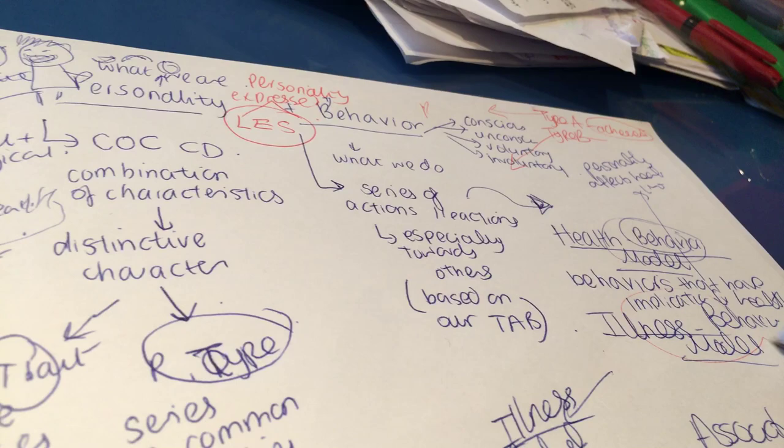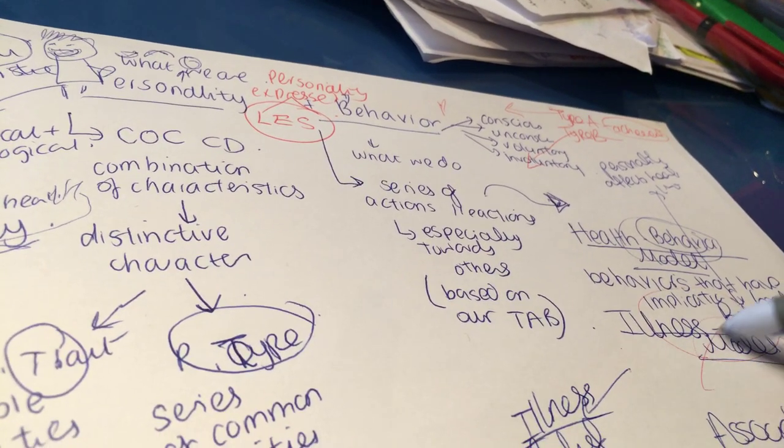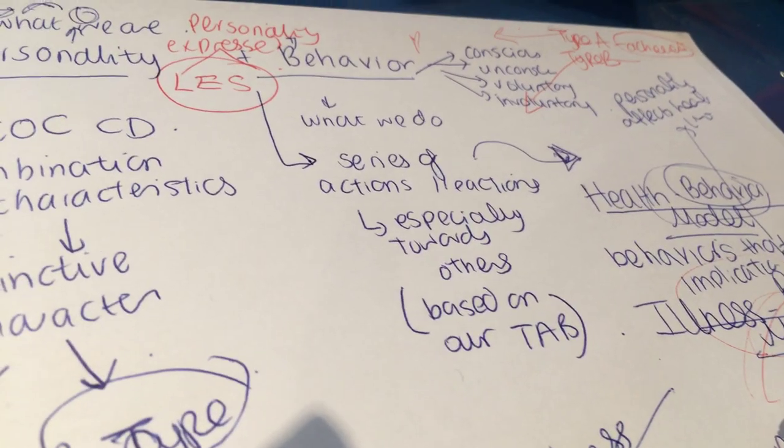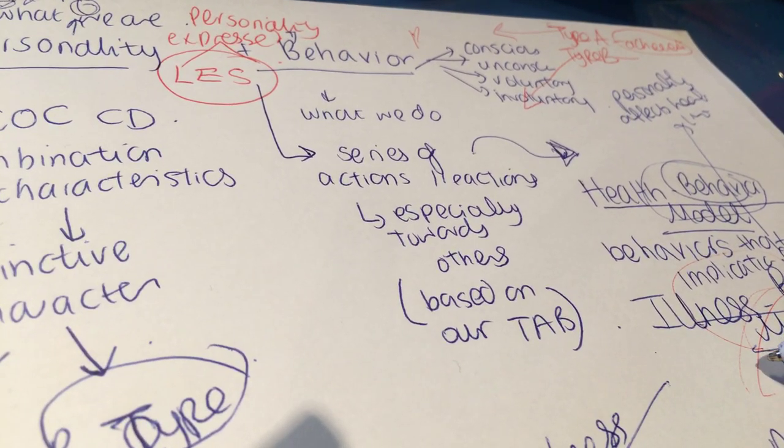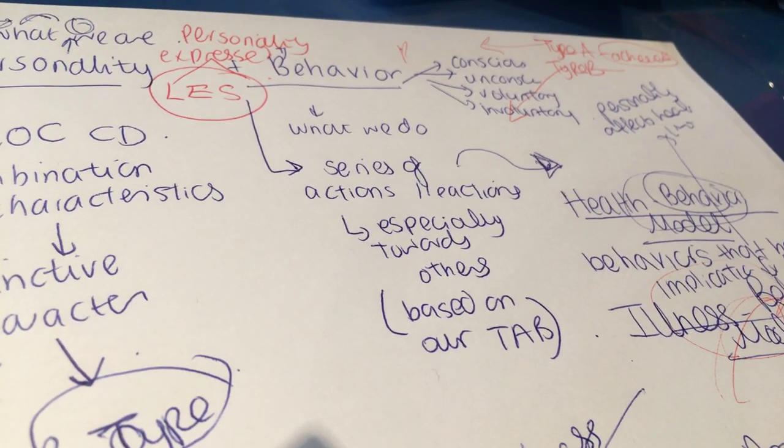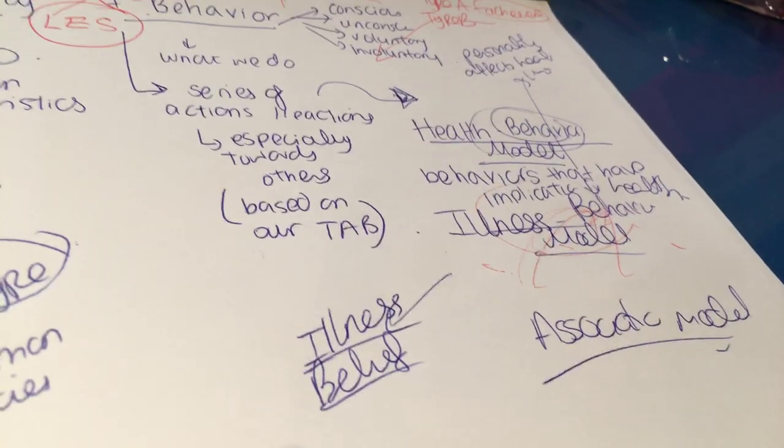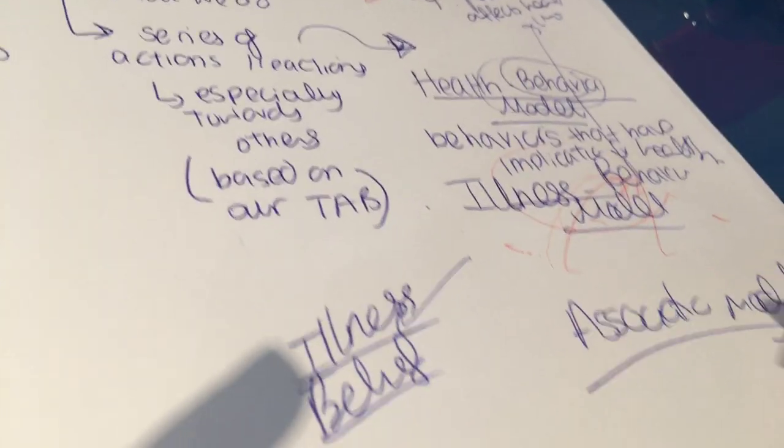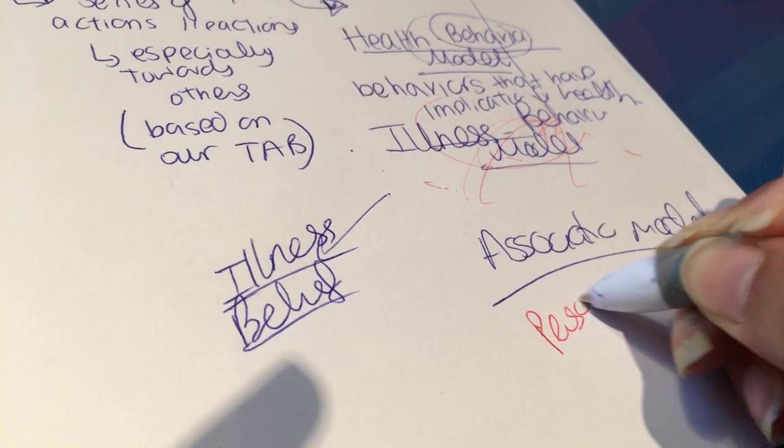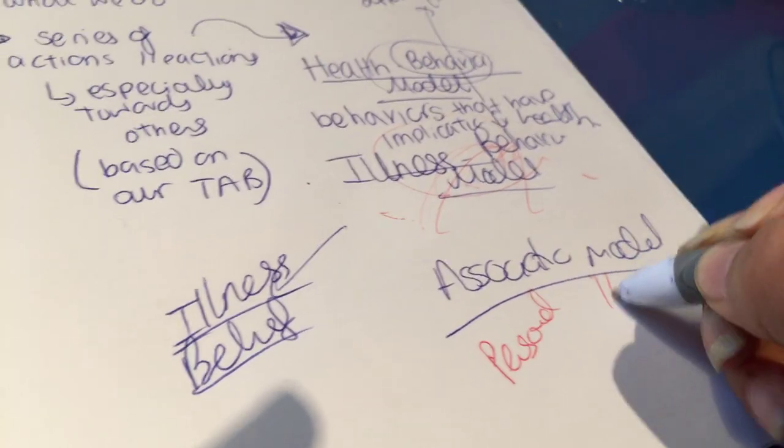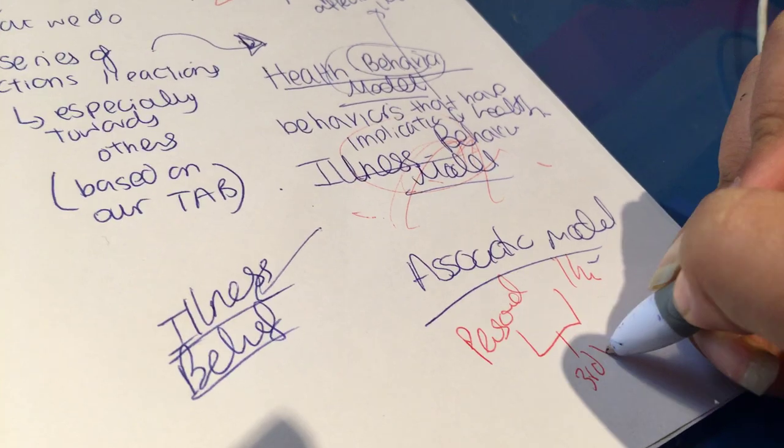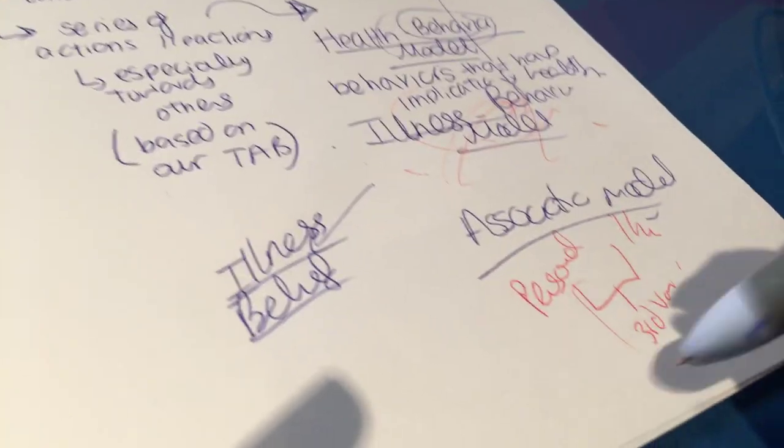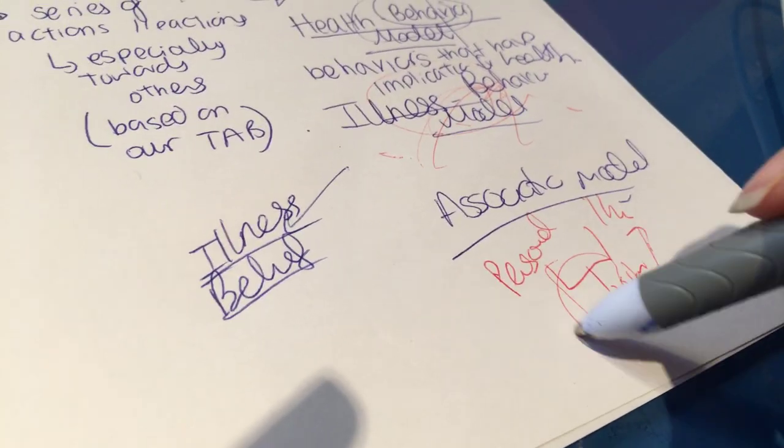Now illness behavior model are reactions or behaviors that are as a result of our illnesses. So illness behavior model is behaviors generated as a result of someone's perception of illness. And association model - associations may exist between personality and illness due to the third variable. So association model is saying that there's personality and there's illness, and these two are connected by a third variable. And associations are existing between personality and illness due to the third variable, which may actually be causing both.